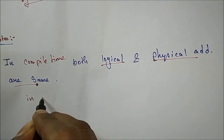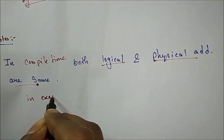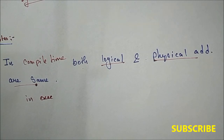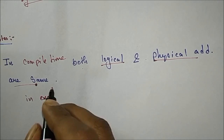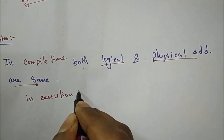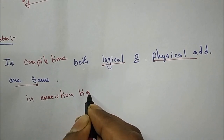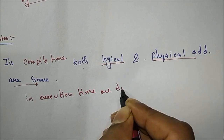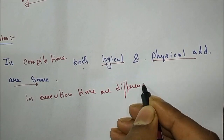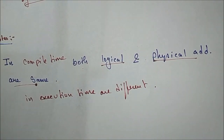In which case are both logical and physical addresses different? The answer is at execution time. When you are executing a program, at that time both logical and physical addresses are different. So at execution time, both logical and physical addresses are different.